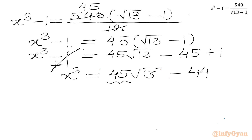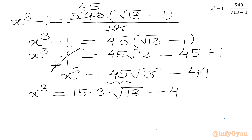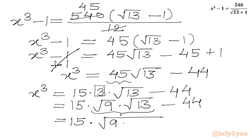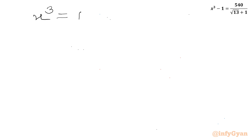Now I can factor 45 as 15 × 3. So x³ = 15 × 3 × √13 - 44. We can write 3 as √9, so x³ = 15 × √9 × √13 - 44 = 15√117 - 44, since 9 × 13 = 117.